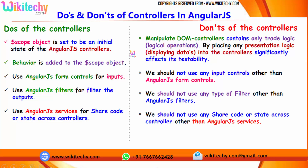If you talk about the do's and don'ts of controllers: the scope object is the initial state of AngularJS controllers, and behavior is added to the scope object. Do's: use AngularJS form controls for input, use AngularJS filters for filtering output, and use AngularJS services for sharing code or state across controllers. Don'ts: don't manipulate the DOM — controllers contain only trade logic; don't use input controls other than AngularJS form controls; don't use any type of filter other than AngularJS filters; and don't share code or state across controllers other than using AngularJS services.